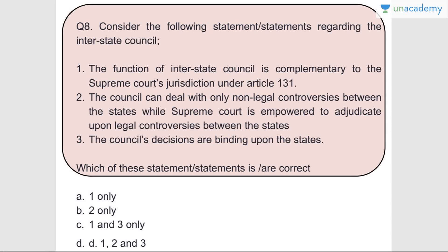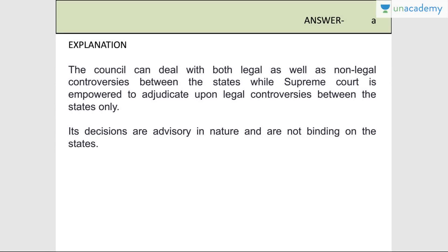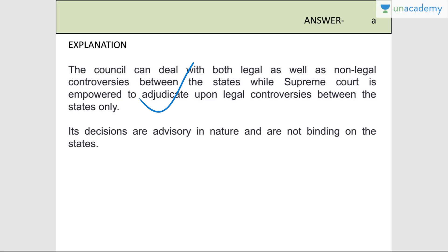Question number eight: Consider the following statements regarding the Interstate Council. Statement one - the function of the Interstate Council is complementary to the Supreme Court's jurisdiction under Article 131. Statement two - the Council can deal with only non-legal controversies between states - wrong. Statement three - the Council's decisions are binding upon the states - wrong. Answer is A, one only. The Council can deal with both legal and non-legal controversies between states, while the Supreme Court adjudicates only legal controversies. The Council's decisions are advisory in nature and not binding on the states.